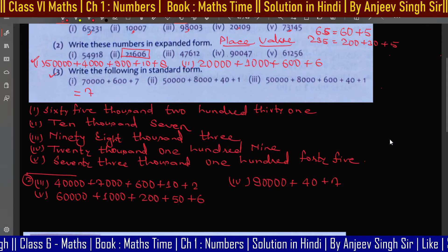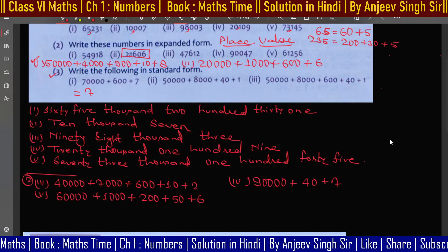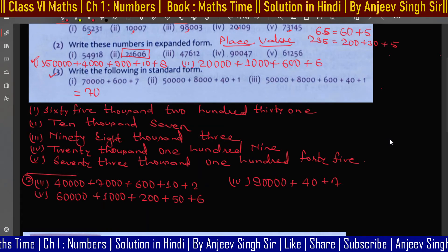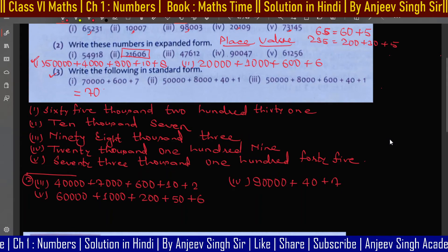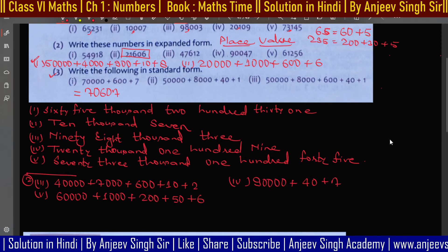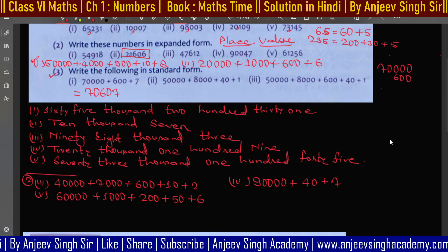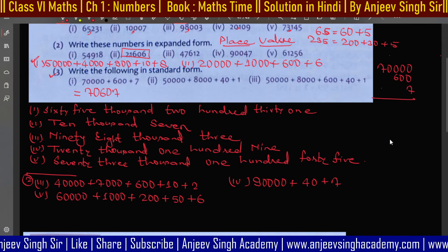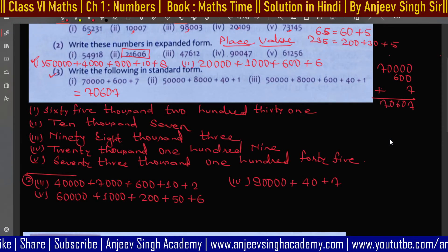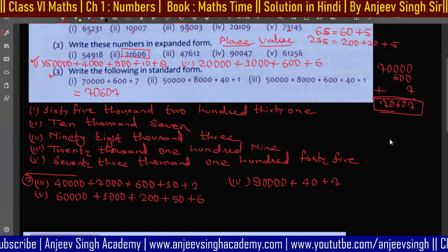Write 7, then look — at the ten-thousands position there is nothing, so I'll place a 0, then write 600, then 7. If you still find it difficult, write each term and add them all up. The sum will give you 70,607. This is how you calculate it.